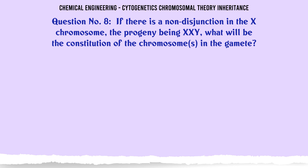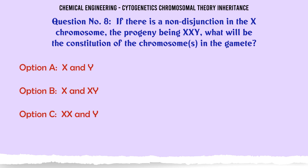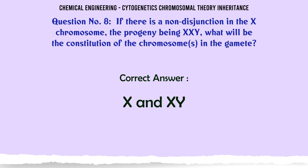If there is a non-disjunction in the X chromosome and the progeny is XXY, what will be the constitution of the chromosomes in the gamete? A: X and Y. B: X and XY. C: XX and Y. D: XXY with no separation. The correct answer is Y.